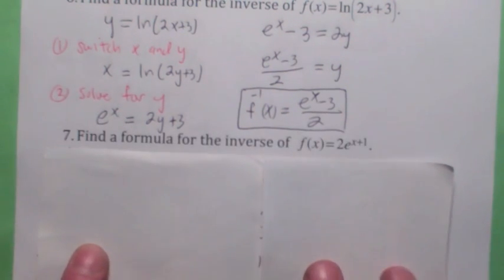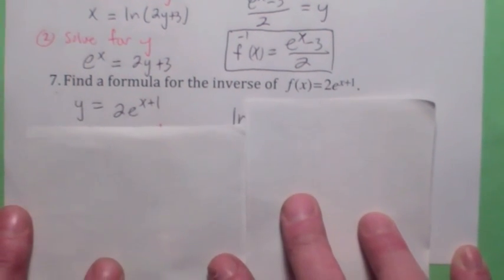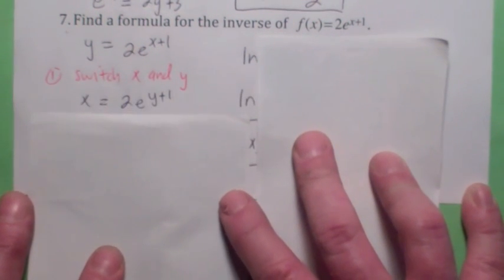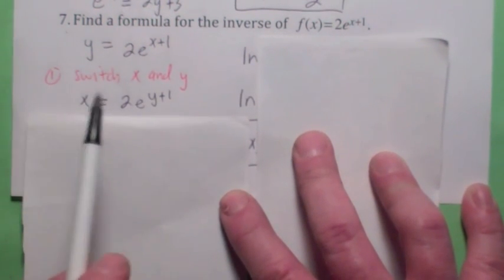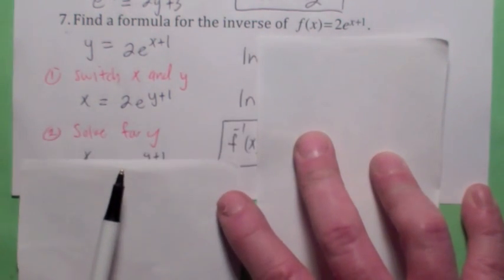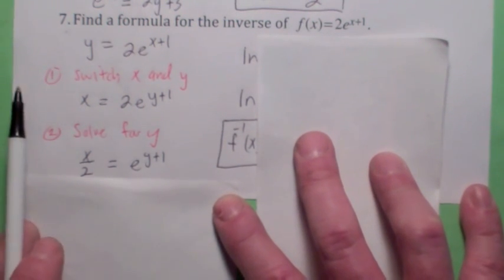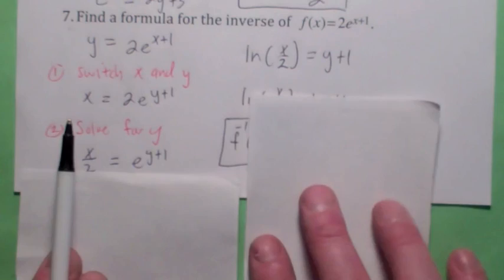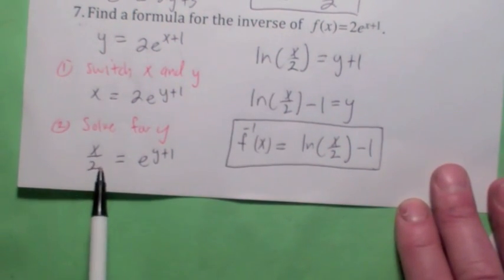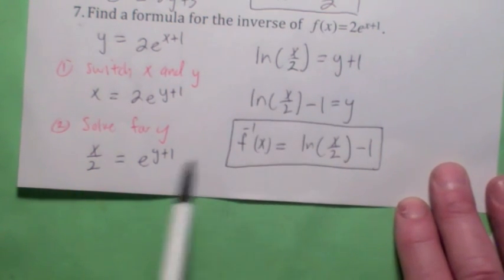Let's do one more. To find the inverse of f of x equals 2 e to the x plus 1, let y equal 2 e to the x plus 1, then switch x and y. You can't use the definition of logarithm until you divide by 2 first. Then rewrite the exponential equation as a logarithmic equation: natural log of x over 2 equals y plus 1. Subtract 1 and you get f inverse of x equals natural log of x over 2 minus 1.